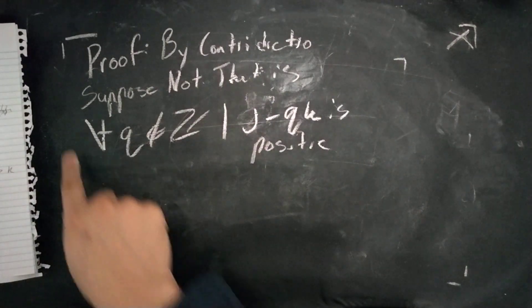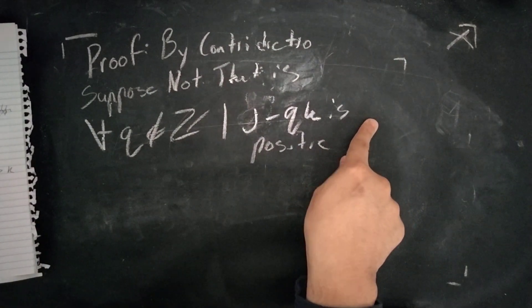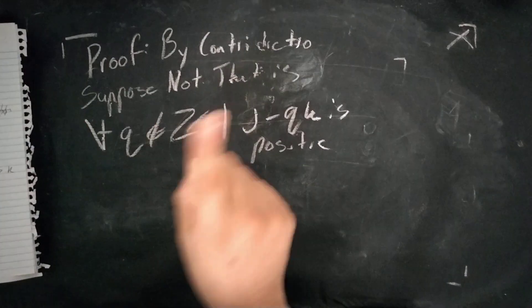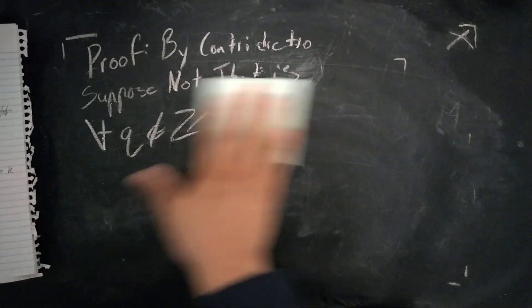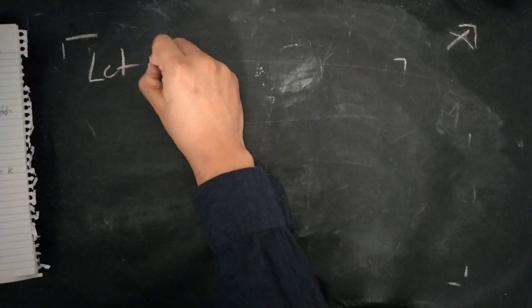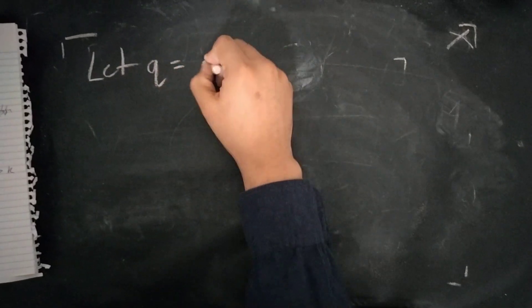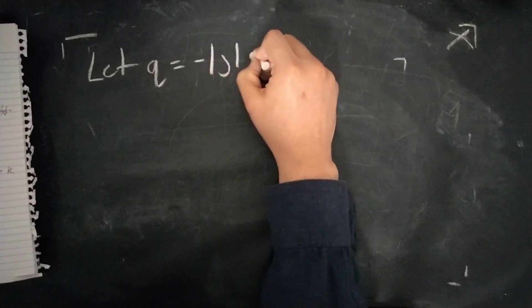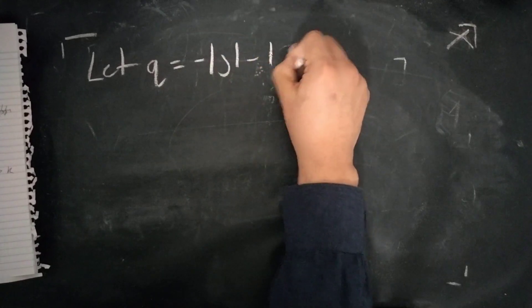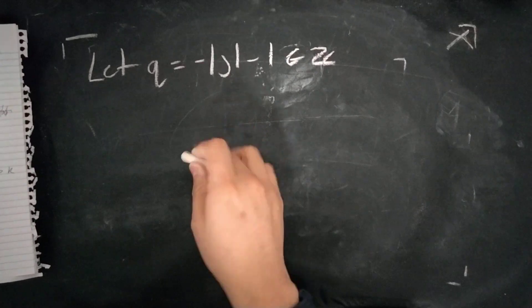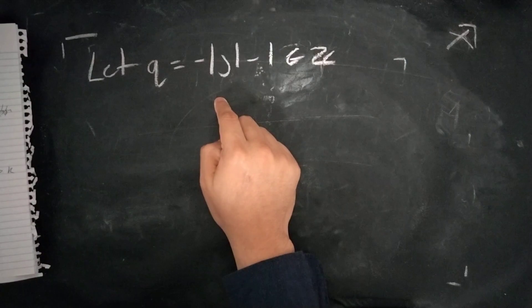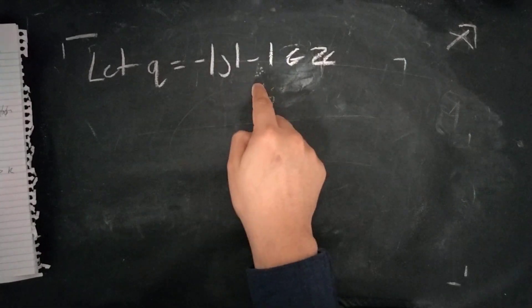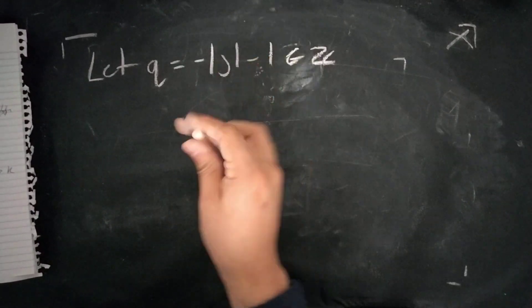Since we know, since I'm writing that there exists none, it's simple enough to at least find one example to disprove the contradiction. In this case, we're going to say, let Q equal to negative absolute value of J minus one. This is an integer because integers are closed under both scalar multiplication and addition. There should still be an integer, even if it's in a weird little format.